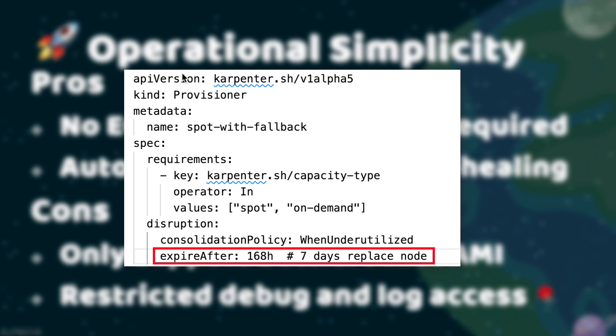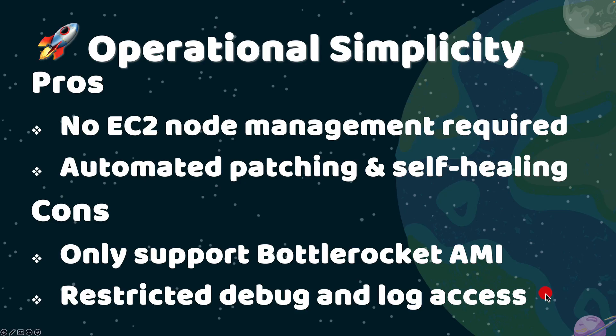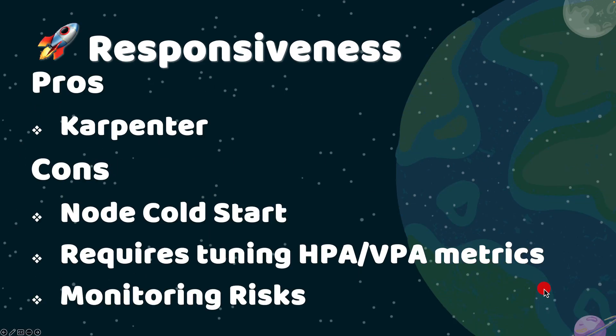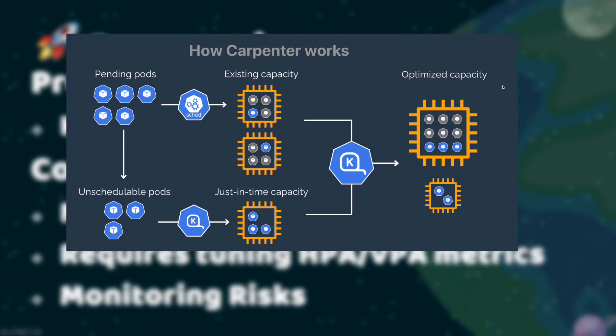One limitation is that EKS Auto Mode has zero-touch policies, meaning you cannot log into the nodes. You have to use logs to debug, and developers need to access logs using CloudWatch or the ELK stack. Now, moving on to how Auto Mode handles traffic changes — Auto Mode uses a tool called Karpenter for automatic node scaling. You don't need to install or configure it; AWS does it for you.